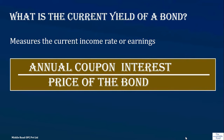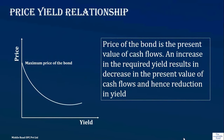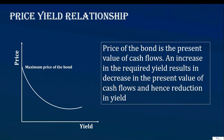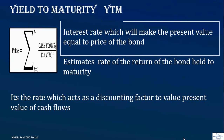The annual coupon interest always remains the same on the face value of the bond, but the price of the bond keeps changing — hence the yield changes. If the price goes up, the yield comes down. Any increase in the required yield decreases the price of the bond. We are now talking about yield to maturity, which is the interest rate that makes the present value equal to the price of the bond.